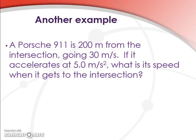Okay, let's look at another example. A car is 200 meters from the intersection and it's traveling at 30 meters per second. If it accelerates at 5 meters per second squared, what's its speed when it gets to the intersection?